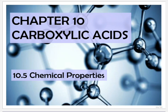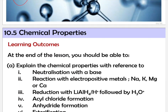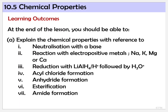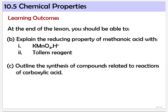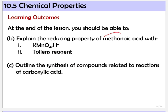Assalamualaikum and hi. So in this video, we're going to learn about the last part of chapter 10, carboxylic acid 10.5 chemical properties. For the learning outcomes, at the end of this video, you should be able to explain the chemical properties of carboxylic acid with these 7 reactions, explain the reducing properties of methanoic acid, and outline the synthesis involving reactions with carboxylic acid.